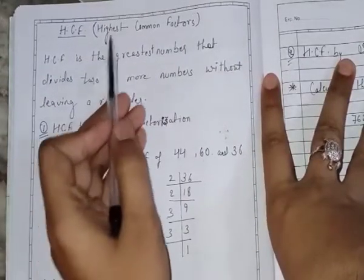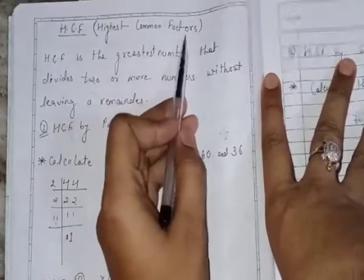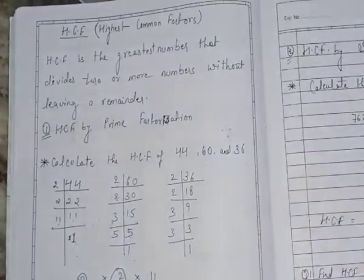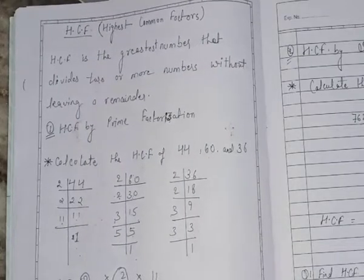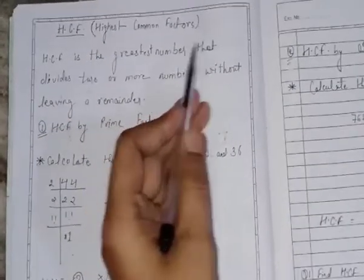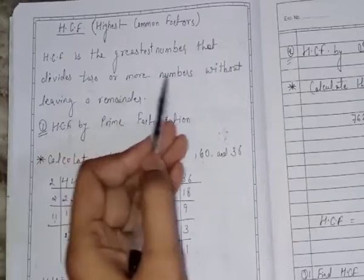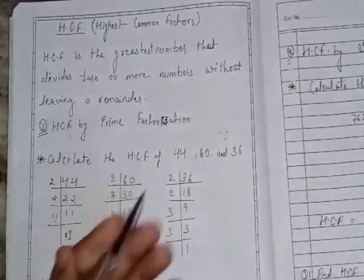What is HCF? HCF means highest common factor. It means that factor which is highest among all the numbers. HCF is the greatest number that divides two or more numbers without leaving a remainder.